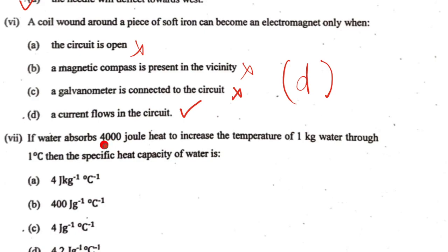Seventh one: if water absorbs 4000 joules of heat to increase the temperature of 1 kg water through 1 degree C, then the specific heat capacity of water is: